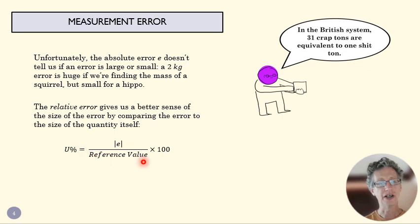Our reference value here is, in this case, if we're measuring the weight of a hippo, what would be the actual value of the weight of the hippo. And so we'd have, you know, two kilograms over 2,000 kilograms, and we'd have a 0.1% error.